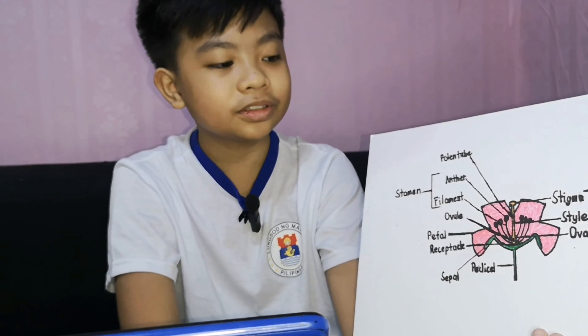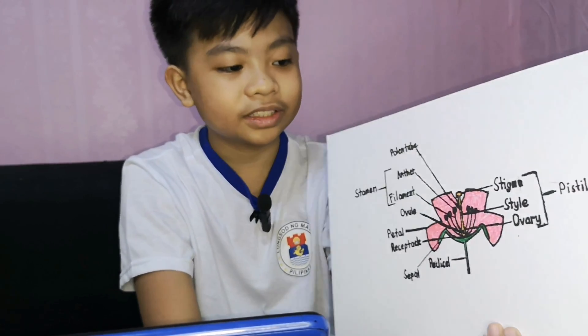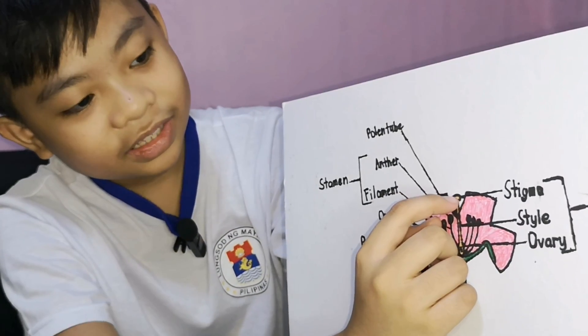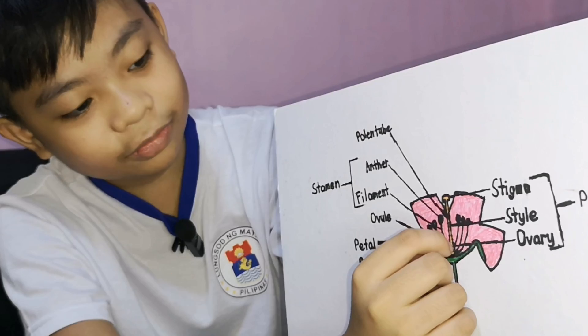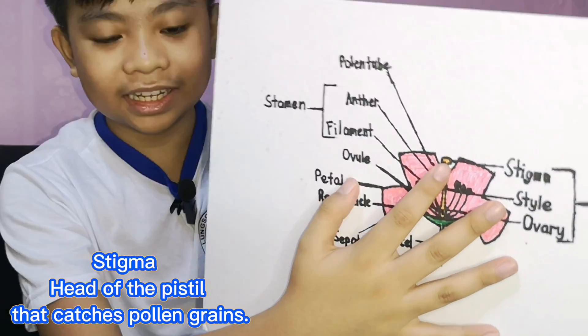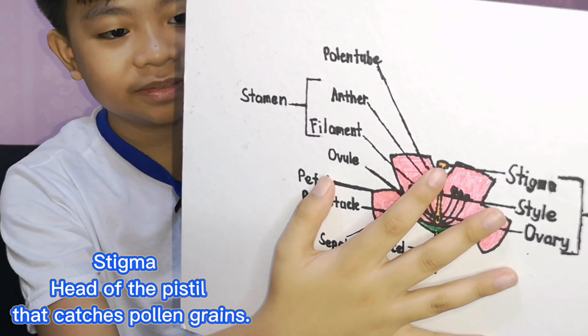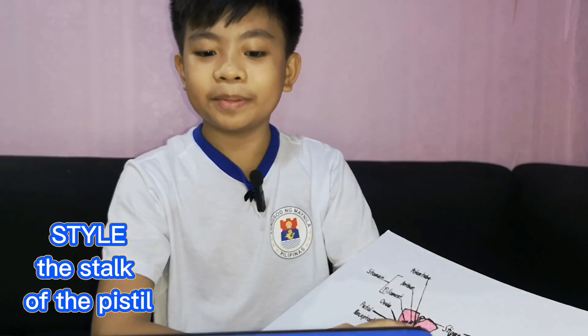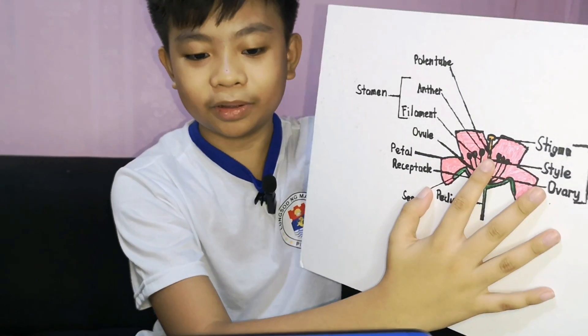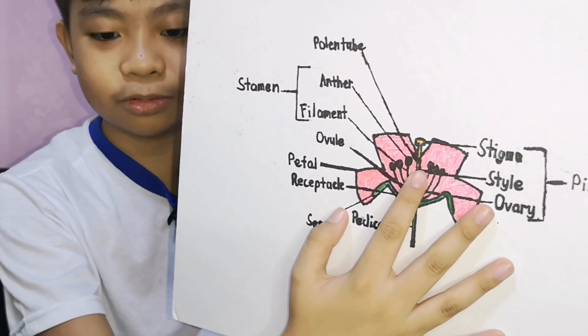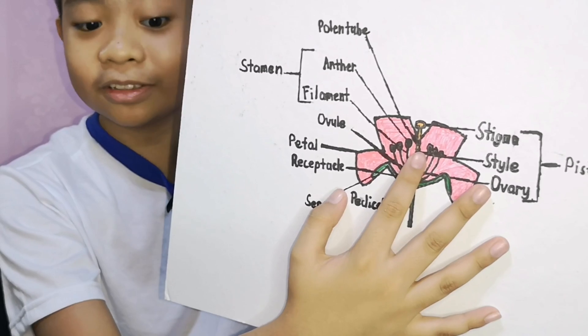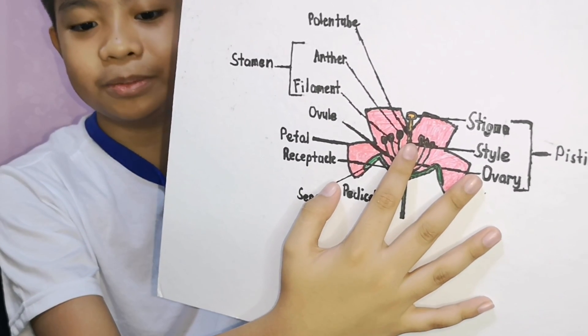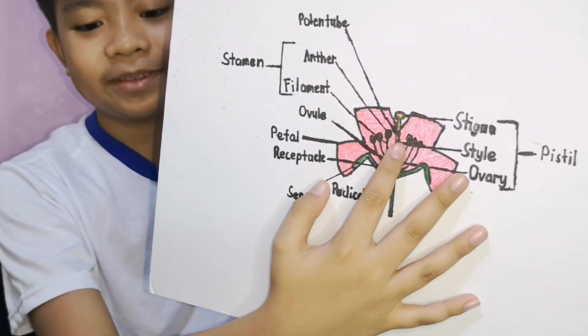Pistil. This is composed of three parts: the stigma, the style, and the ovary. Stigma is the head of the pistil that catches pollen grains. Style is the stalk of the pistil. When pollen grains reach the stigma, a tube-like structure grows through the style called the pollen tube, which reaches the ovary.